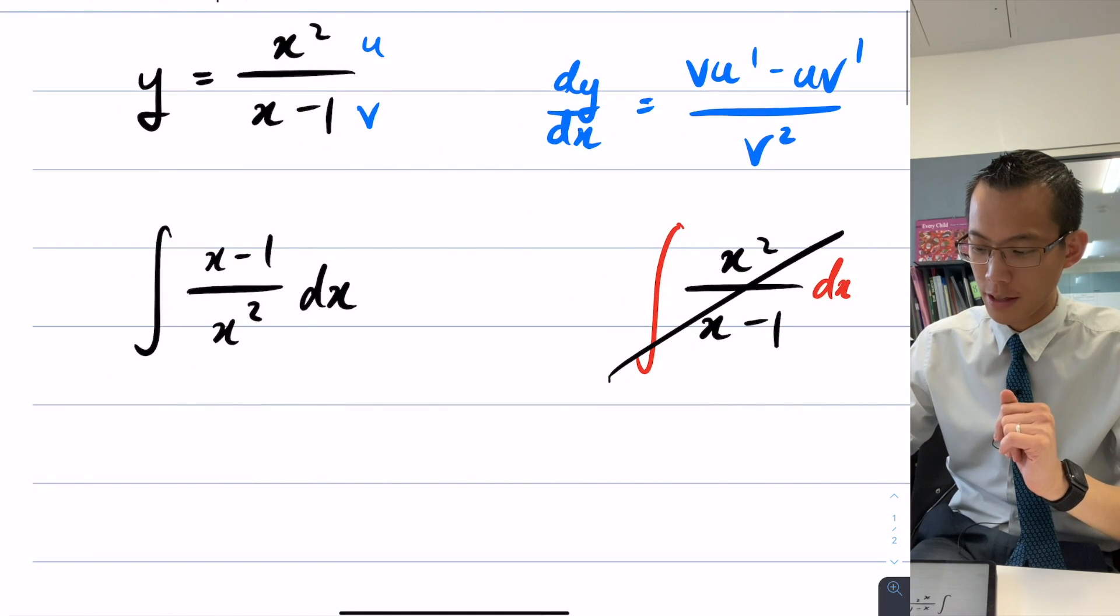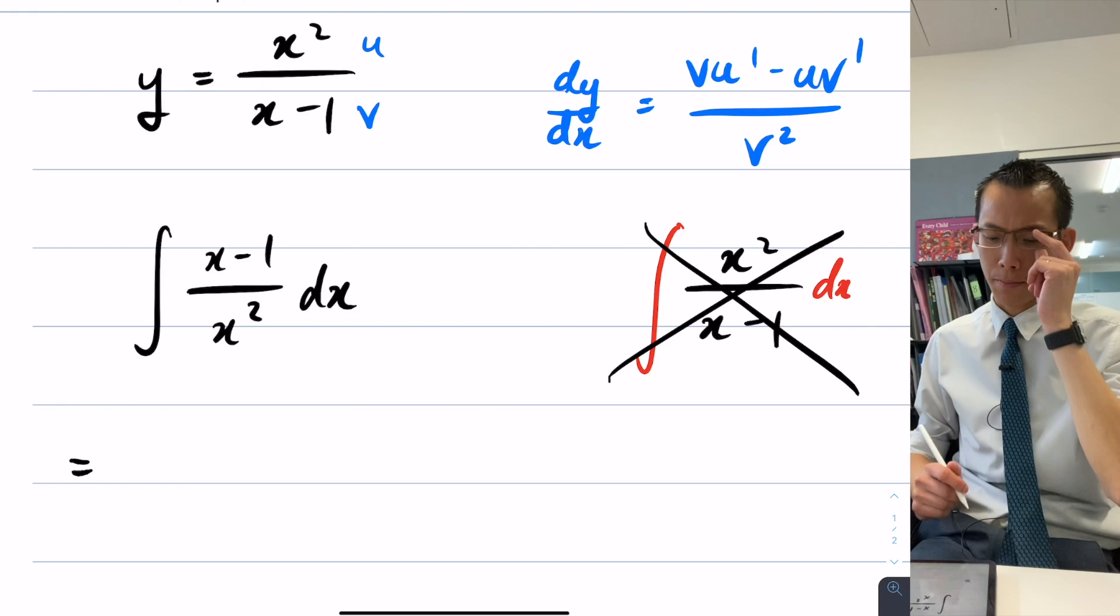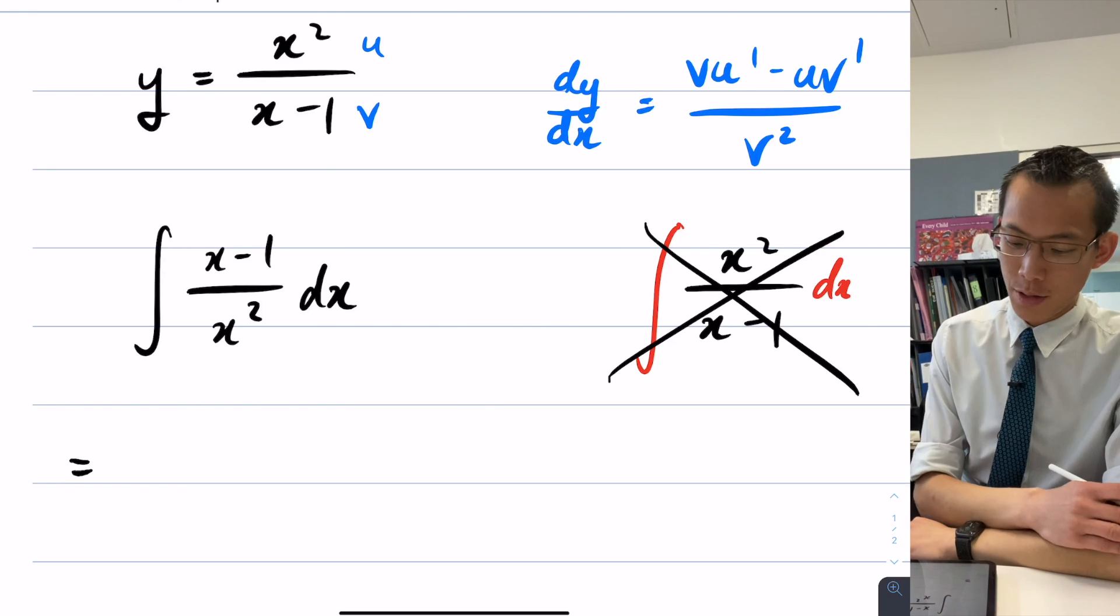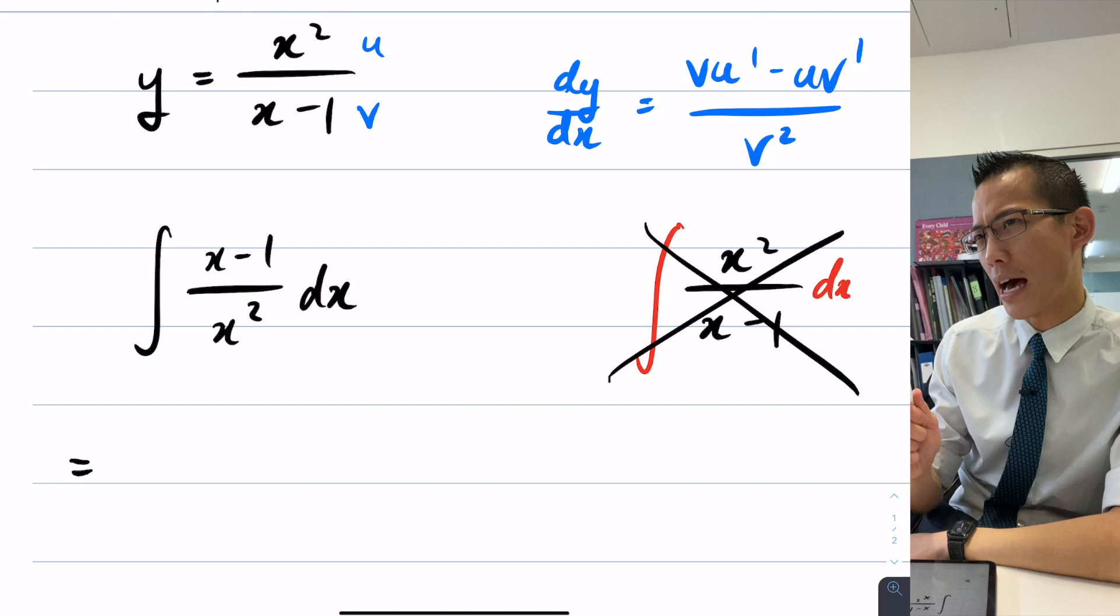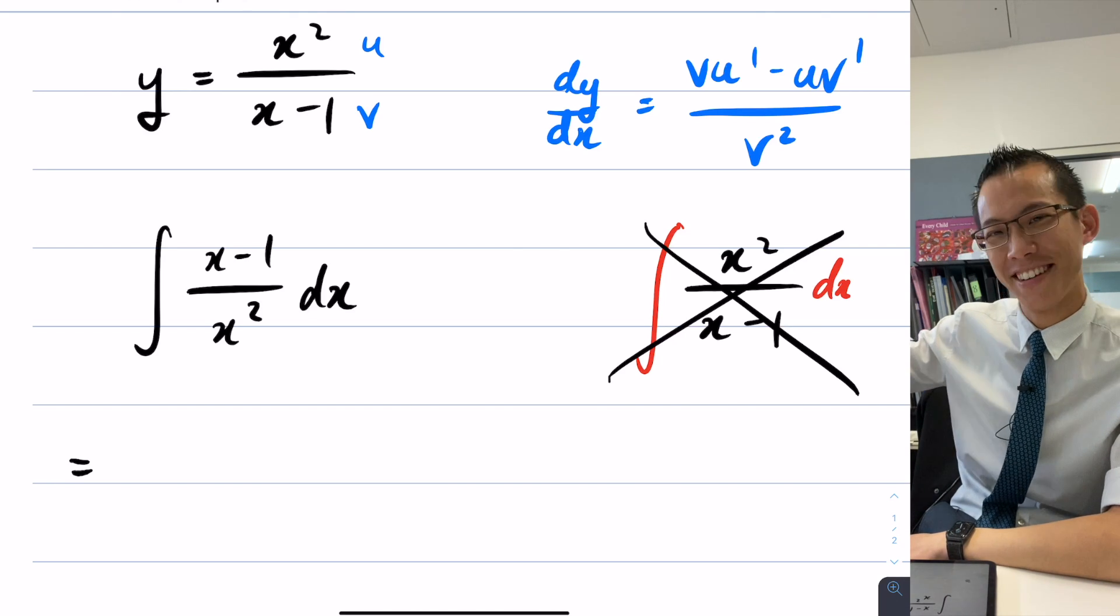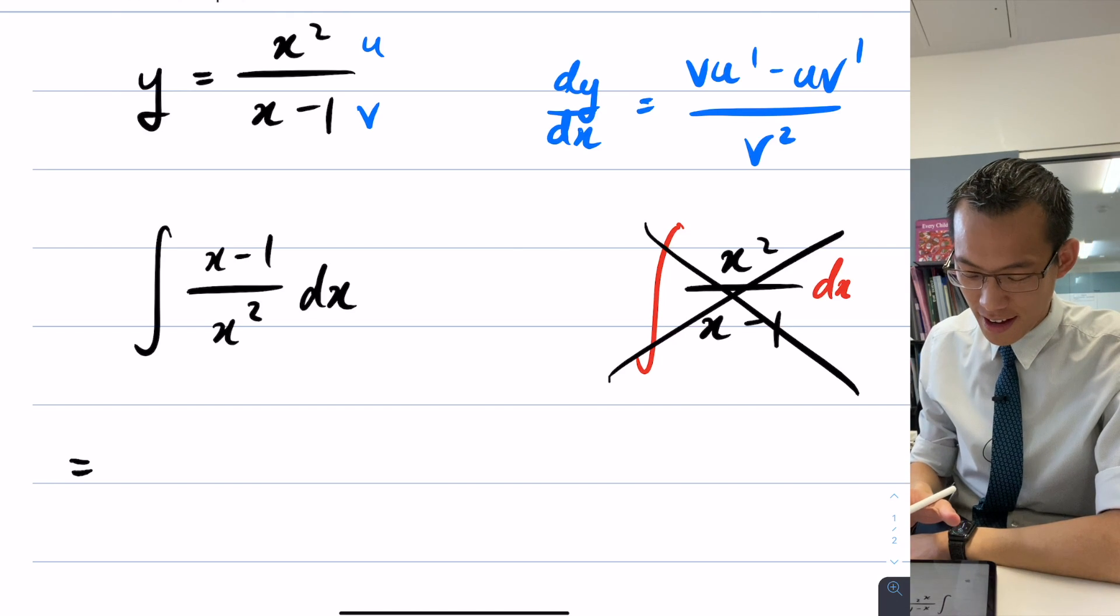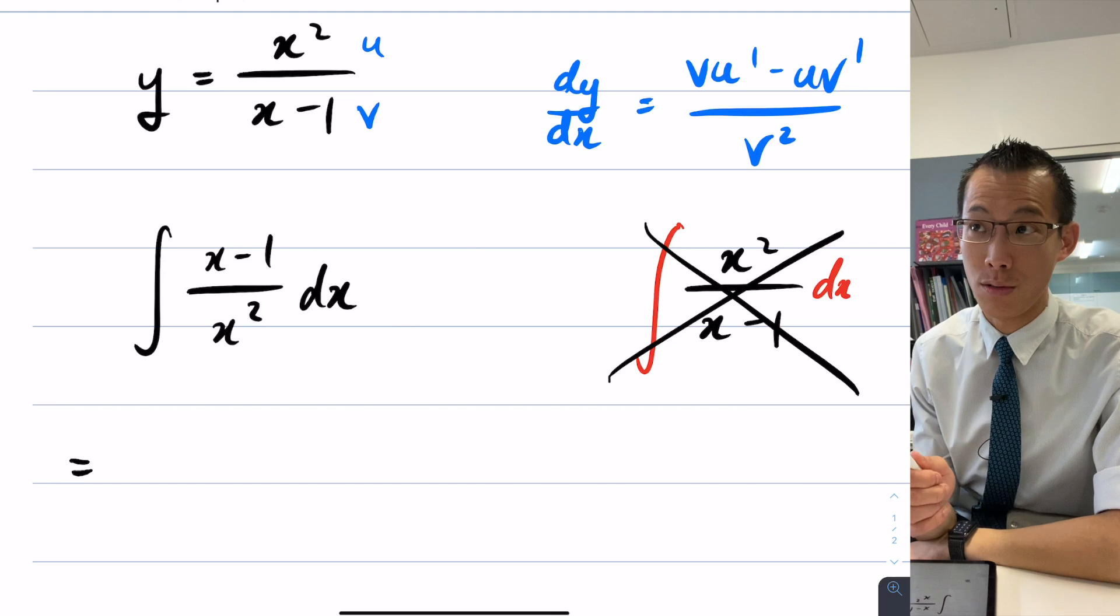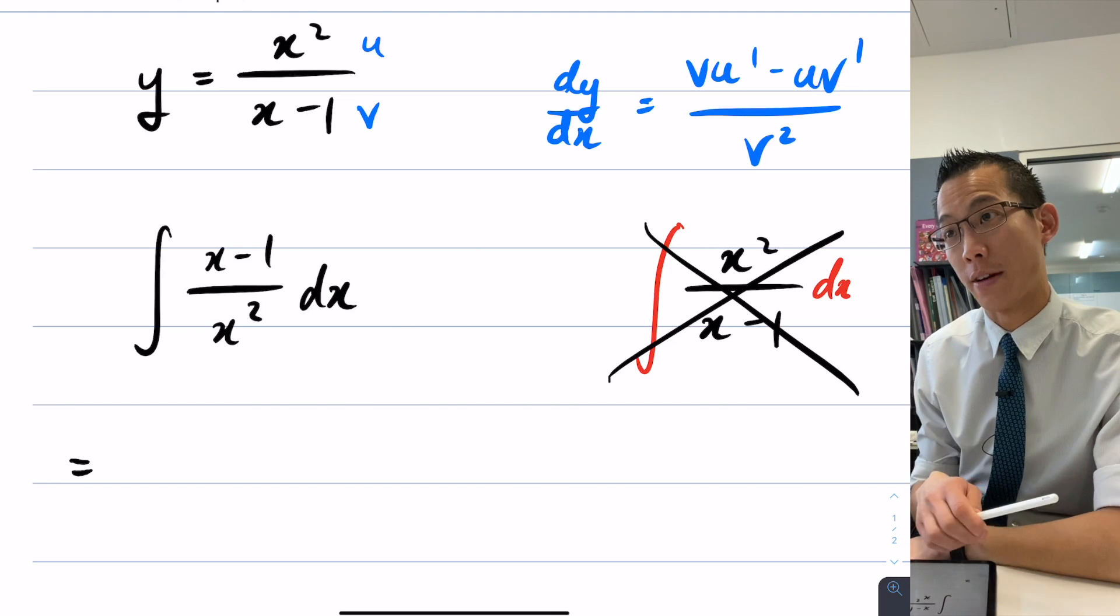We will forget about this one and we just have a go at this one. Okay, now something you said before was very perceptive, which is that the numerator there, you're fine, the numerator there, it's very close to the derivative of the denominator.